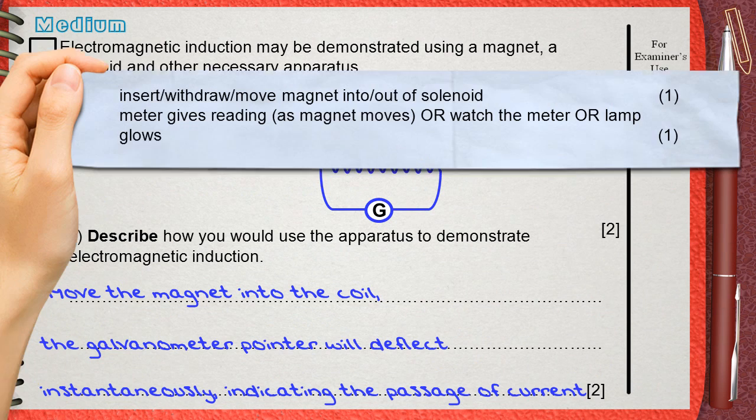This question is also for two marks. The first mark is for mentioning that you will insert or withdraw the magnet into or out of the solenoid. This is the first mark, this is what you will do.